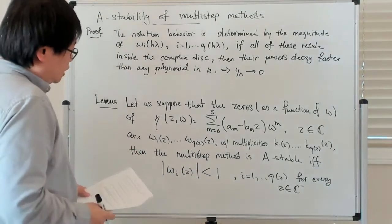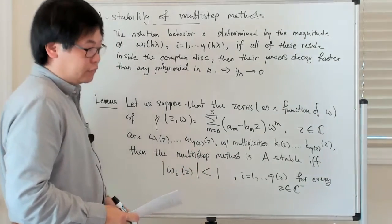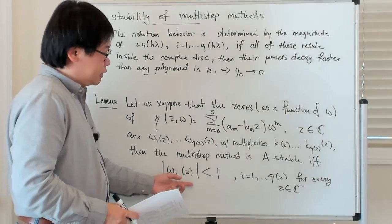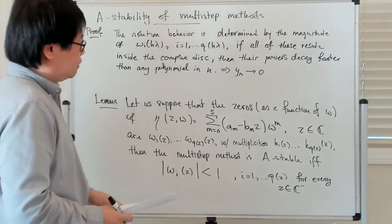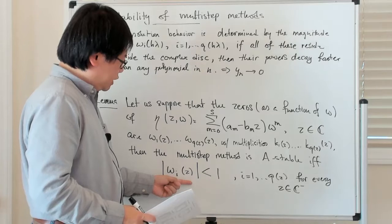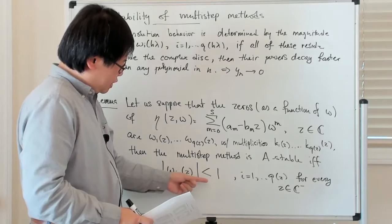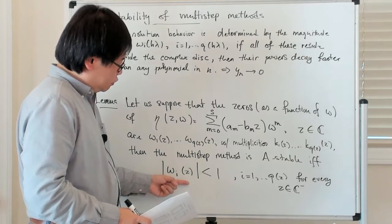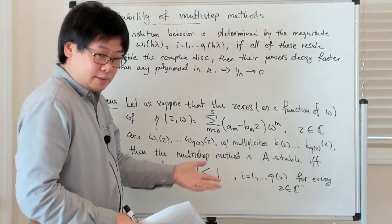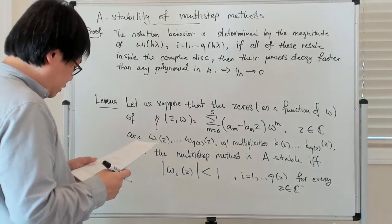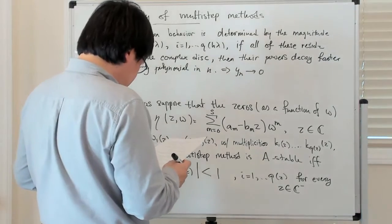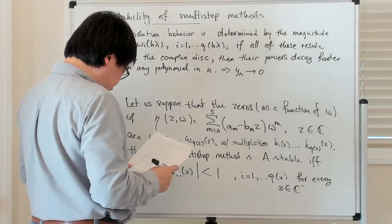Recall that when we talked about the root condition for a linear multi-step method, we relaxed the condition: instead of requiring modulus strictly less than 1, we allowed modulus less than or equal to 1, provided you worried about multiplicities. We impose the stricter condition here because whether or not you have multiplicities depends strongly on the coefficient, which now depends on where you are in the left half plane — and that's just too difficult to check. So this stricter condition is a sufficient condition for A-stability.